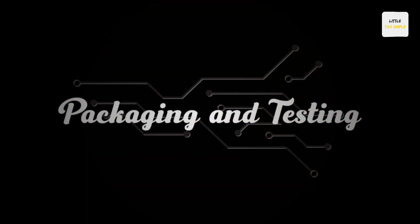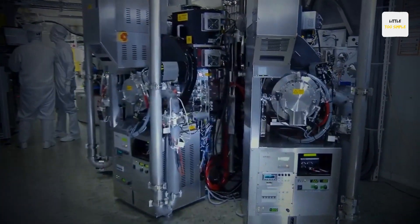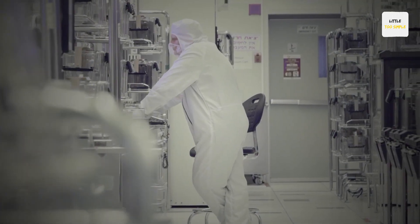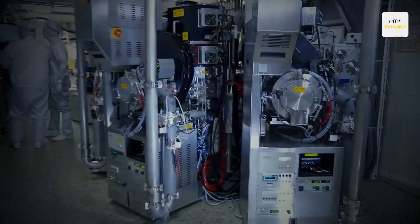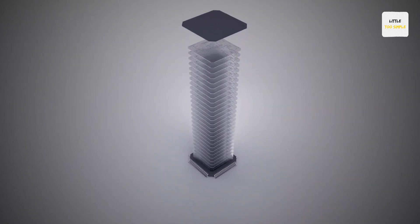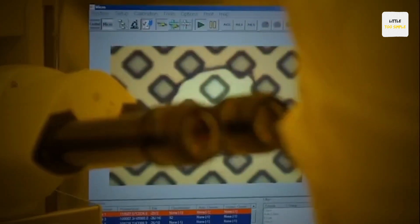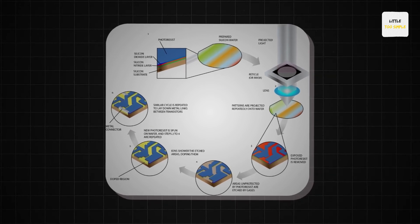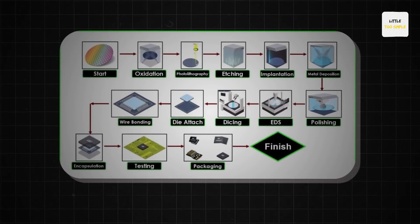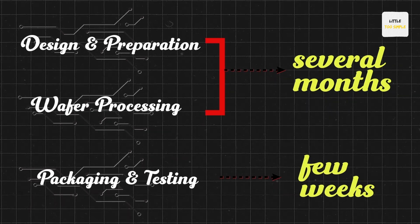Stage 3 is Packaging and Testing. After processing the wafer, it is cut into individual chips, each placed in its final package, then tested thoroughly to ensure they function correctly and meet quality standards. While this overview simplifies the process, the actual fabrication is much more intricate, with numerous sub-steps and additional complexities.